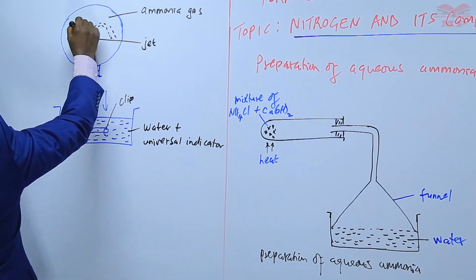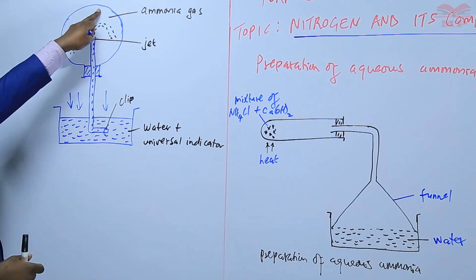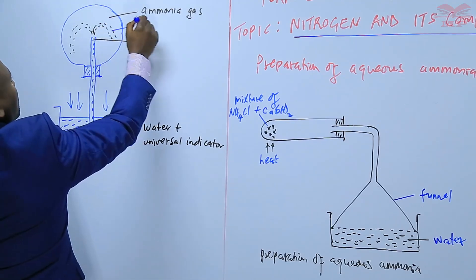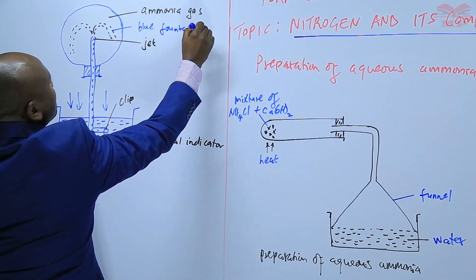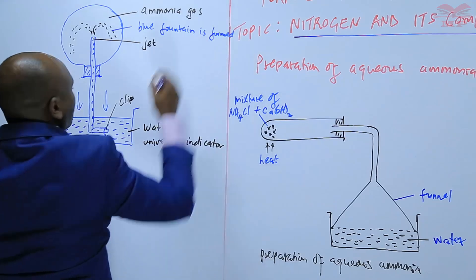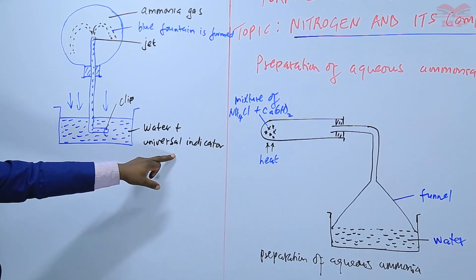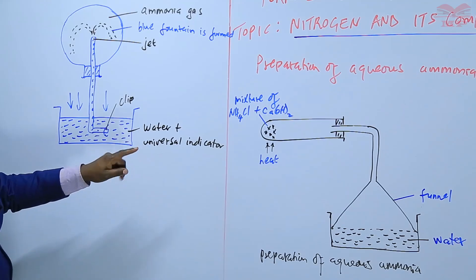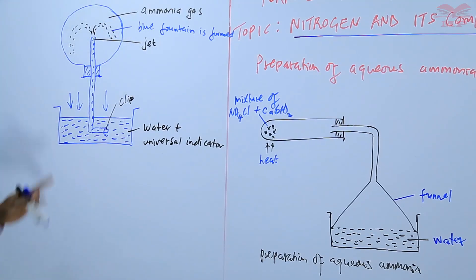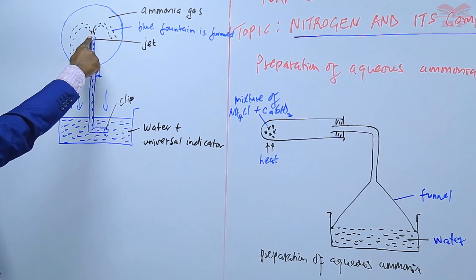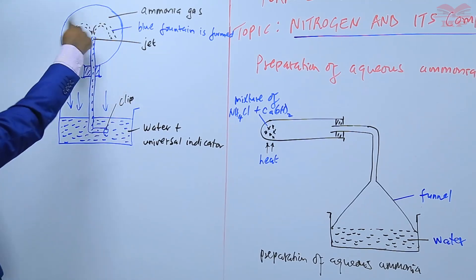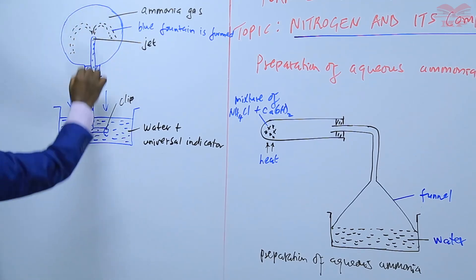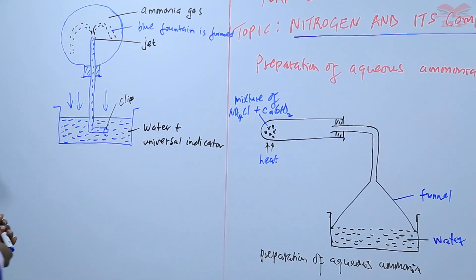As the water occupies the space that was initially occupied by the ammonia, a blue fountain is formed. And that is because when there is universal indicator and it combines with water and ammonia, which is now the ammonia solution, it turns the universal indicator blue and that's what makes now the fountain to be blue. So this is what you are calling the fountain experiment. Just a single drop of water plus universal indicator mixture dissolves all the ammonia gas inside here and that creates a vacuum inside the flask and that's what makes the formation of the fountain.